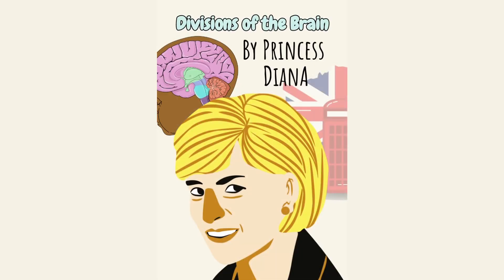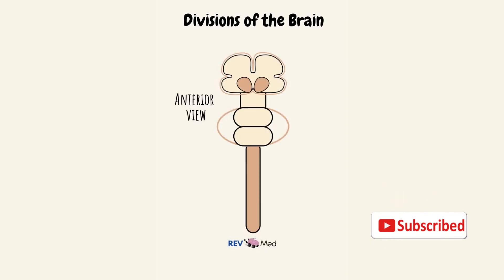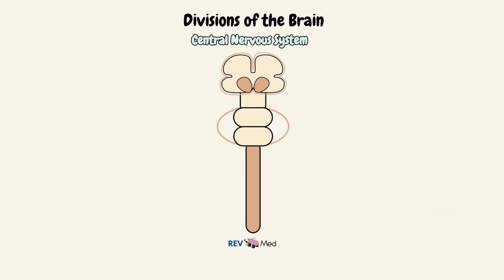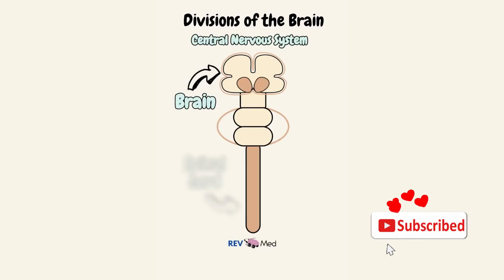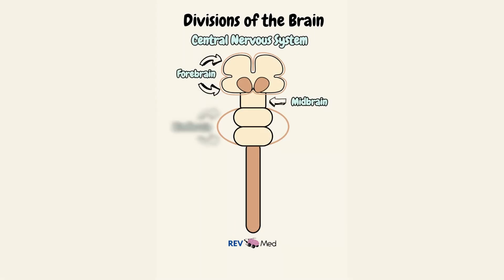Let's see how Princess Diana can teach us the divisions of the brain. Here's an interior view of the brain — this is the central nervous system consisting of the brain and spinal cord. This is the forebrain, the midbrain, structures below the hindbrain, and finally we have the spinal cord.